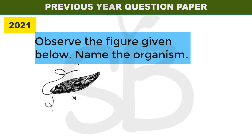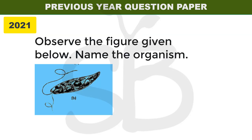Observe the figure given below and name the organism. Identify the name of the organism from the diagram. This organism is from the kingdom Protista. Parts A and B are labeled in the diagram.